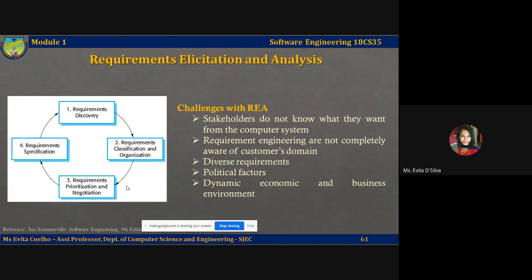Requirements elicitation and analysis is an iterative process with continual feedback from each activity to the others. The process cycle starts with requirements discovery and ends with requirements documentation or specification. The analyst's understanding of the requirements improves with each round of the cycle, and the cycle finally ends when the requirements document is satisfactorily complete. Now, eliciting and understanding requirements from system stakeholders is a difficult task — what are the challenges with this process?